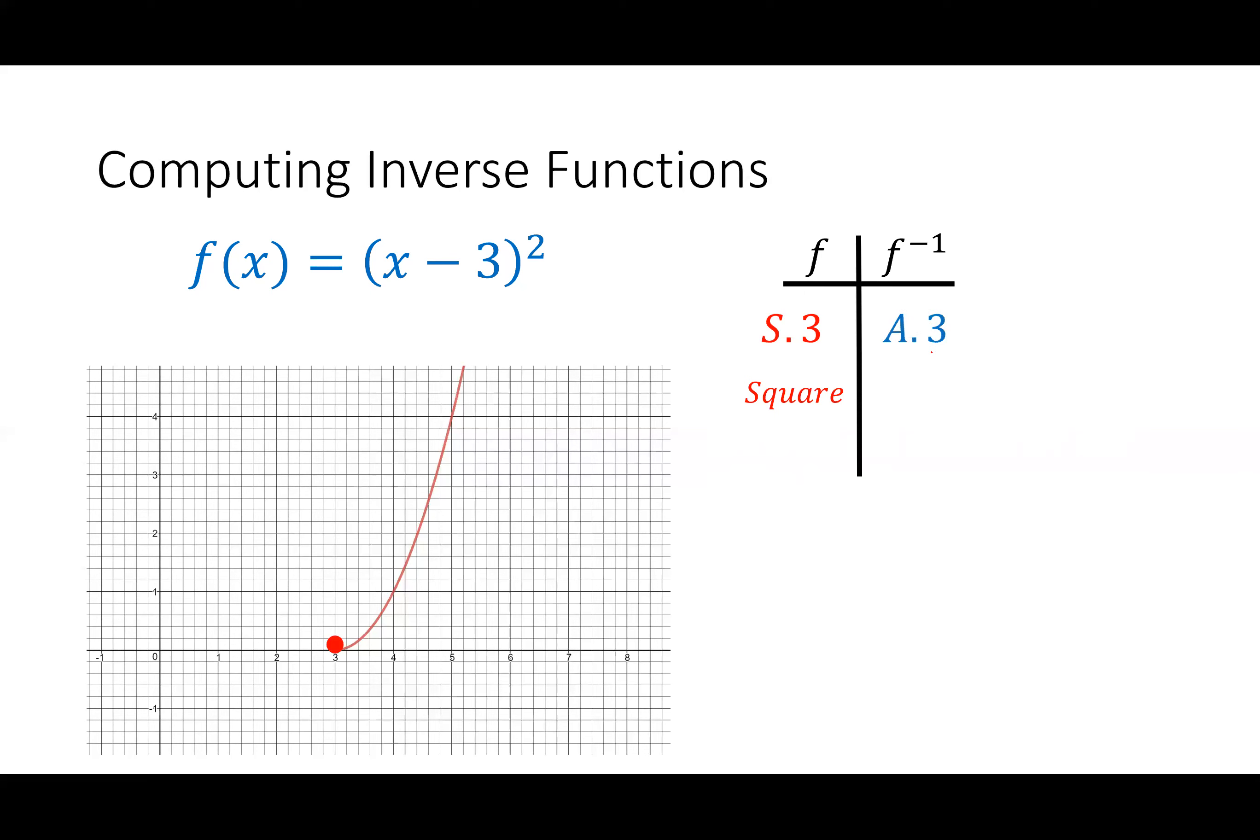The opposite of subtract 3 is add 3, and the opposite of squaring is square rooting. So I'm going to start with x, and the first thing I'm going to do, since I'm going up the table now, is I'm going to square root. Now, I'm done with the square root. I don't need it anymore. Now I'm going to add 3, so I'm just going to have plus 3 on the outside of it. Now, what does this function actually mean, and how does it interact with the original? We found the inverse, but what does it do?